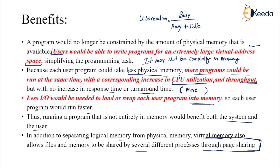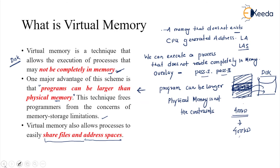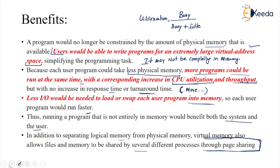So that is the introduction to virtual memory. The main bottom lines are: first, a process may not be completely in memory; second, a program can be larger than the physical memory; and third, sharing of files and address space is enabled. These are elaborated in the benefits section. I hope you understand what exactly virtual memory is. Thank you.